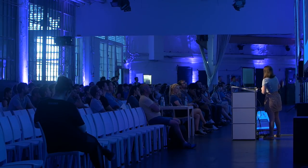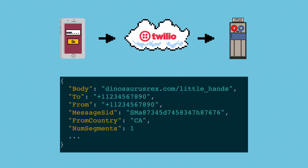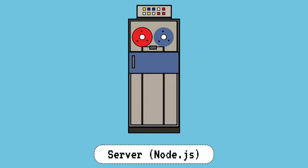Twilio picks up on this message and converts it into a format the server can actually read. It comes with a whole bunch of metadata. We're only going to really care about the body, who it's to, and who it's from, so that we know who to send this message back to. This message gets sent over to the server, which we're going to look at next.